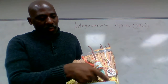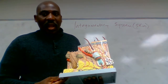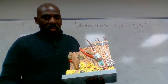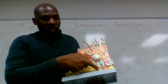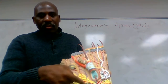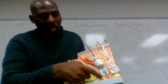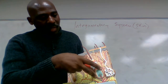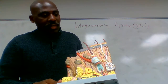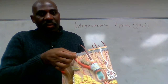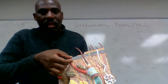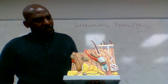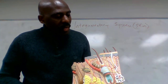The skin has three layers. From the inside to the outside we have the hypodermis, represented here by the yellow coloration; then the light pinkish portion in the middle, which is called the dermis; and right at the top we have the epidermis. So those are the three layers of the skin.